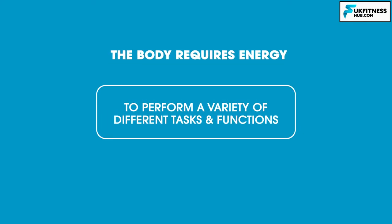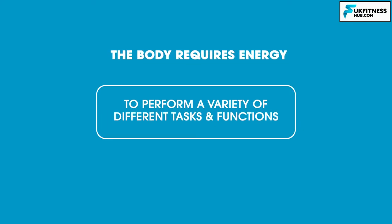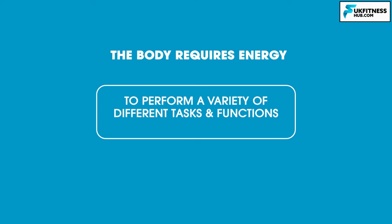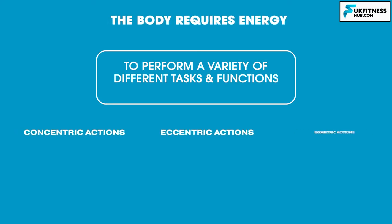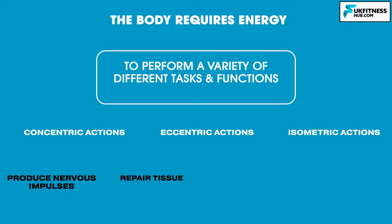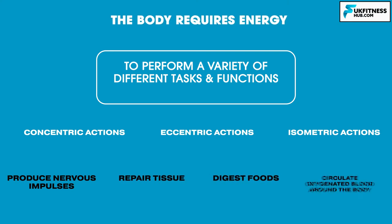The body requires energy in order to perform a variety of different functions and tasks. Muscles need energy to produce concentric, eccentric, and isometric muscle actions. Other cells in the body require energy to produce nervous impulses, repair tissue, digest foods, and circulate oxygenated blood around the body.